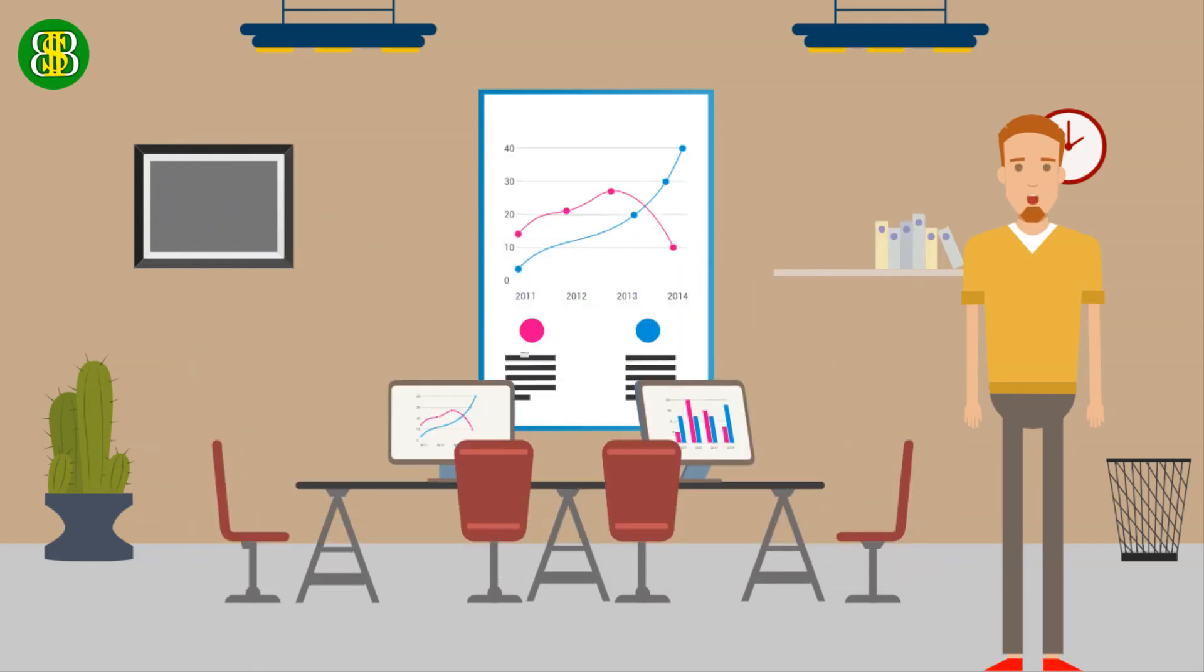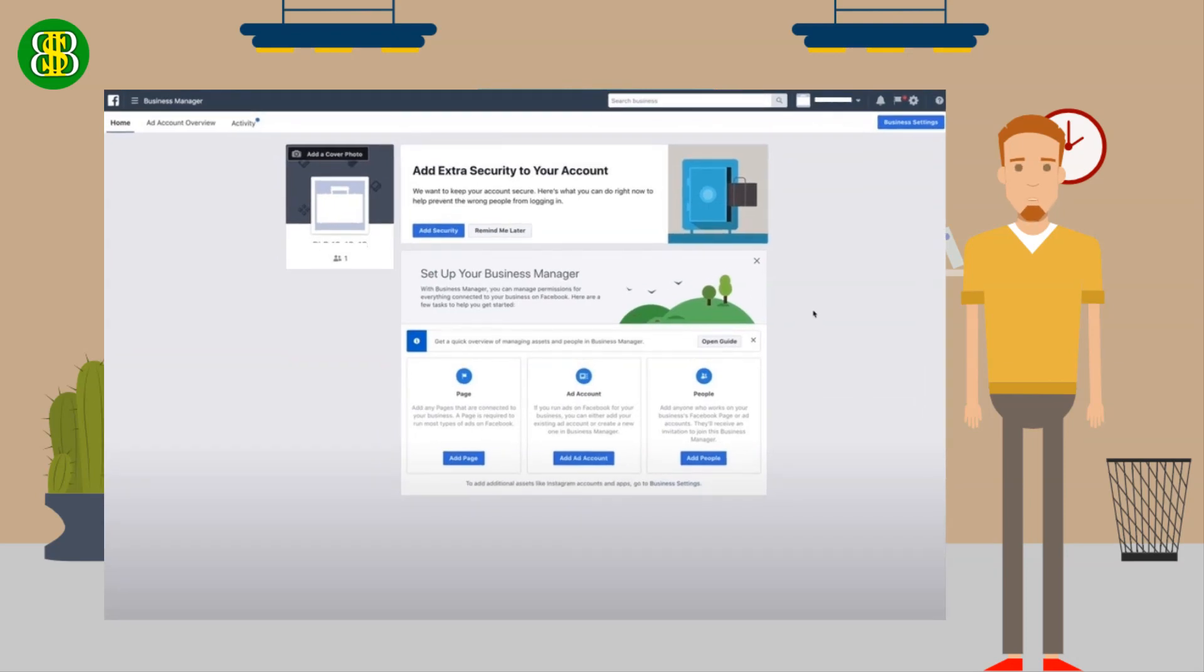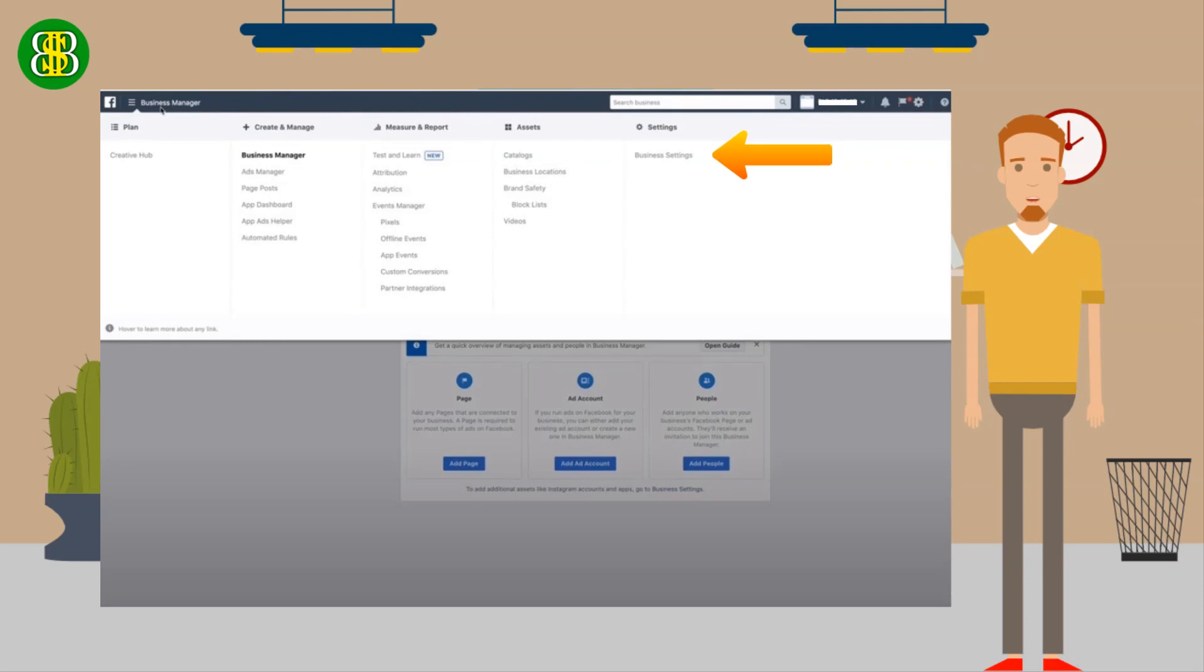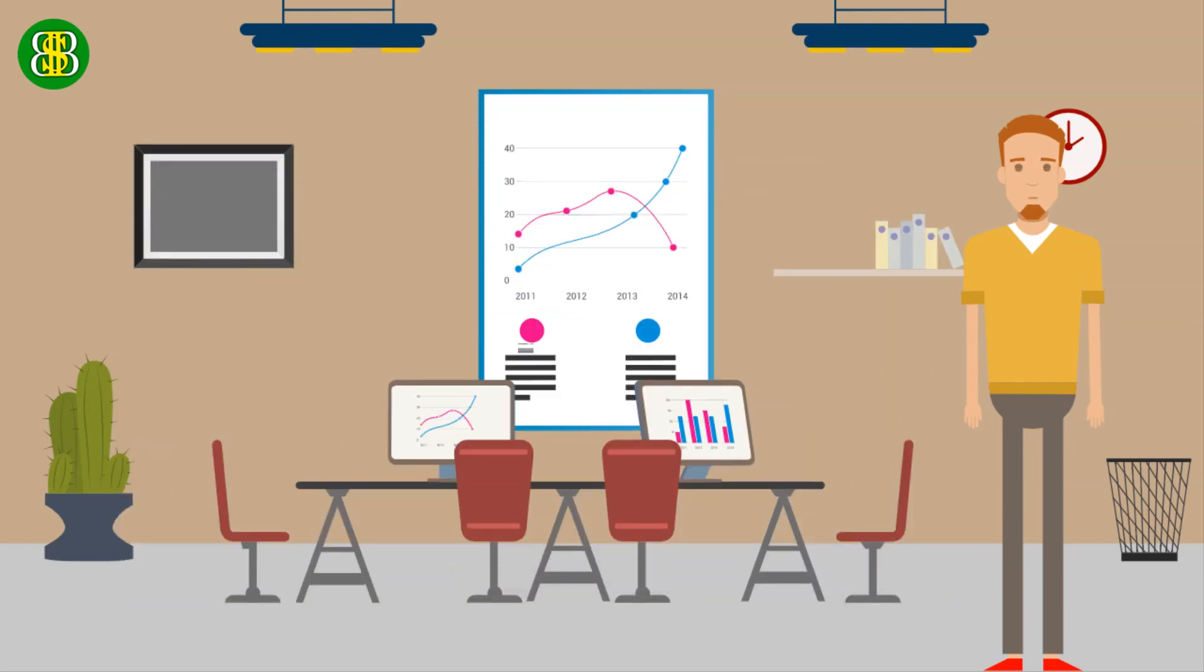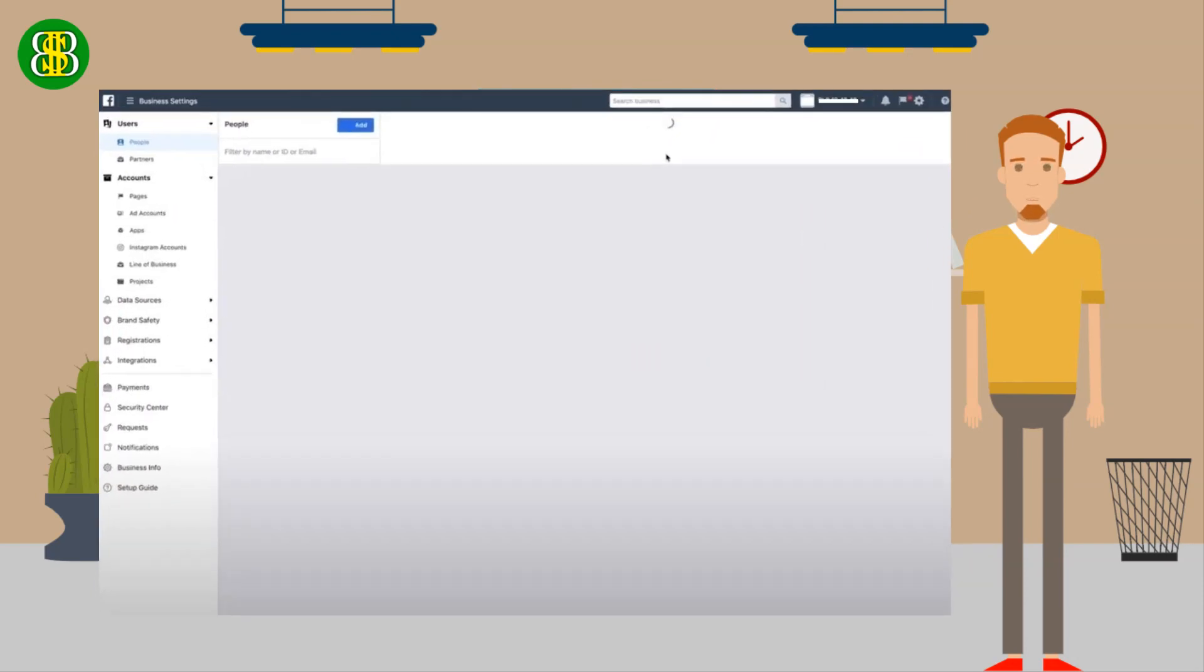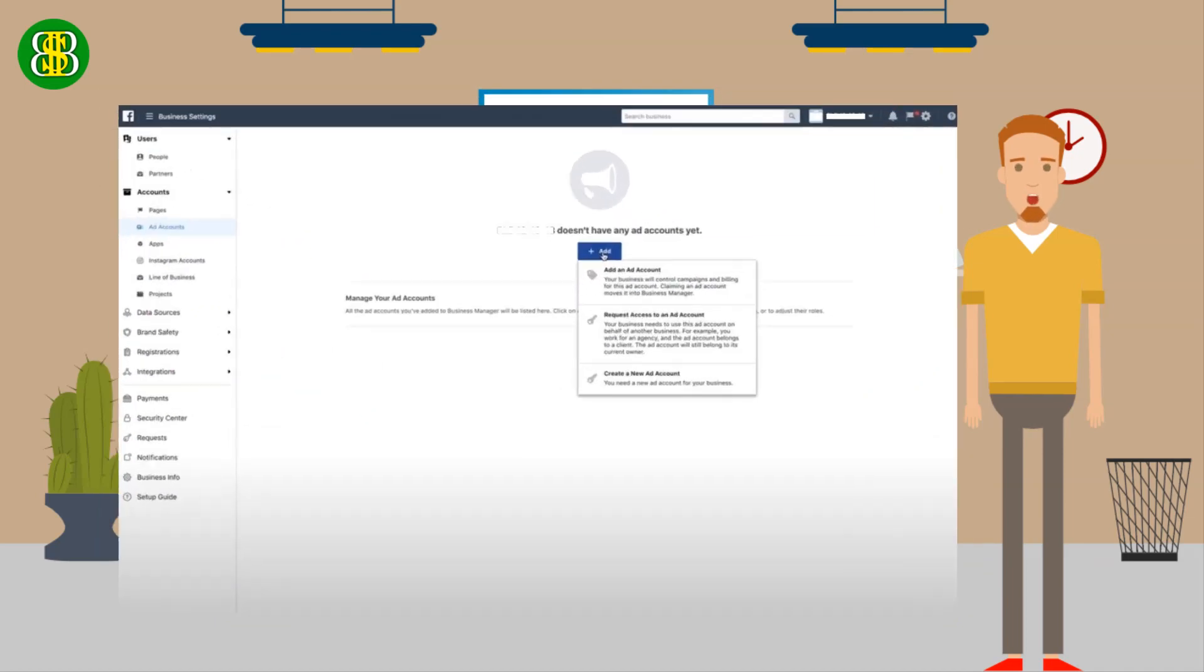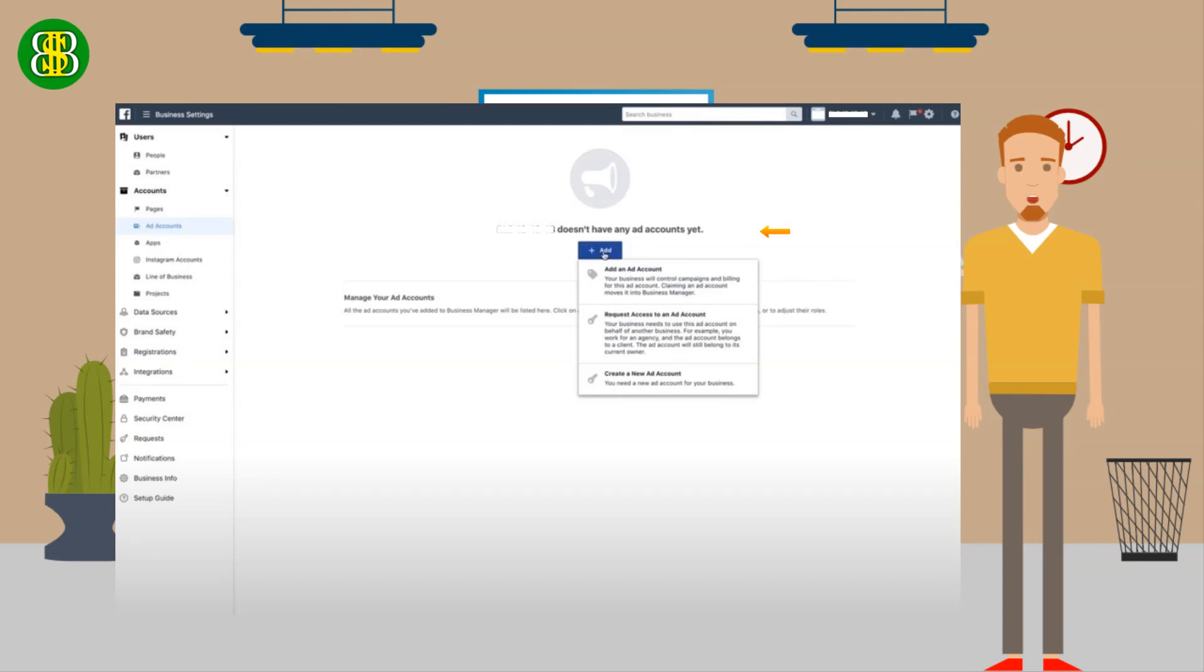So now we are here on business manager. There'll be a couple of things you want to do first. First, you want to go to business settings, click this business manager tab and on the far right you will see the business settings, click that. Under the business settings, click on ad accounts. If you haven't created any ad accounts you will see this page that says you don't have an ad account yet. To create one, just click this add button right here.